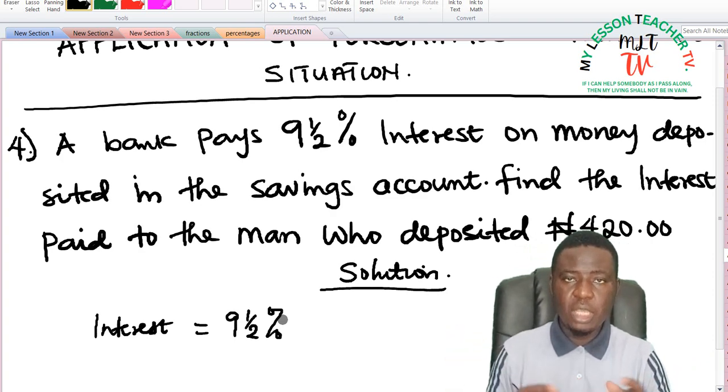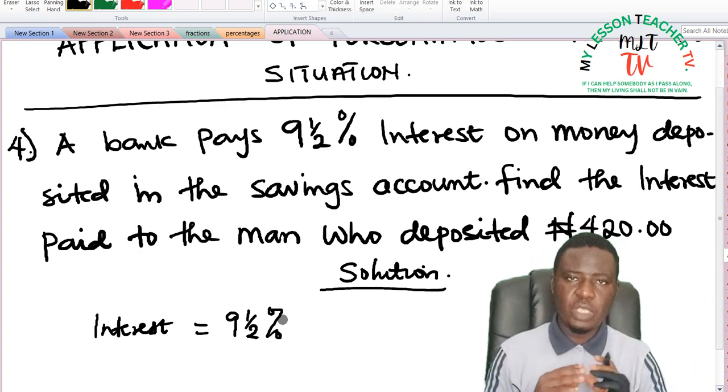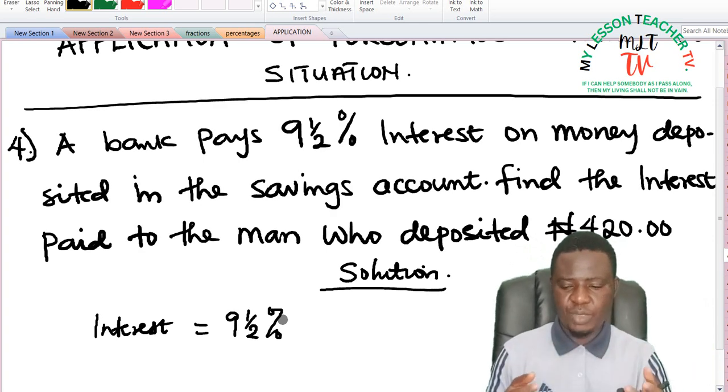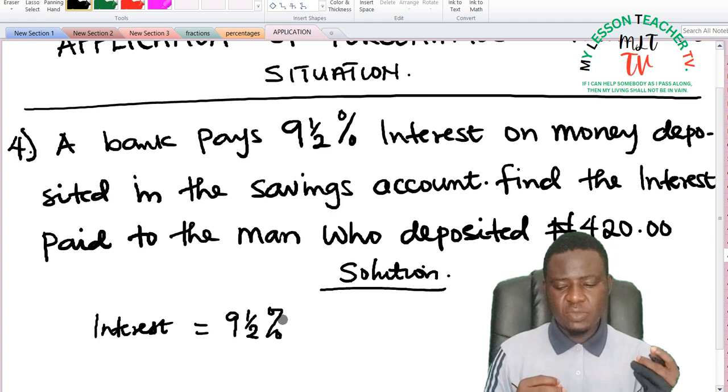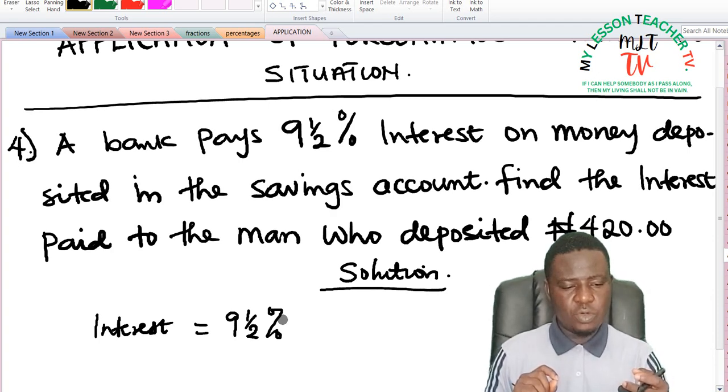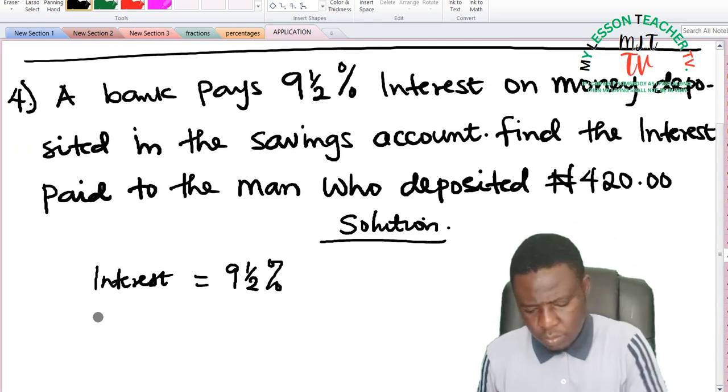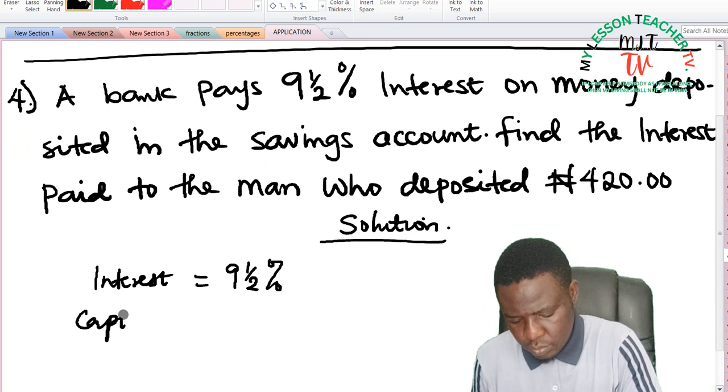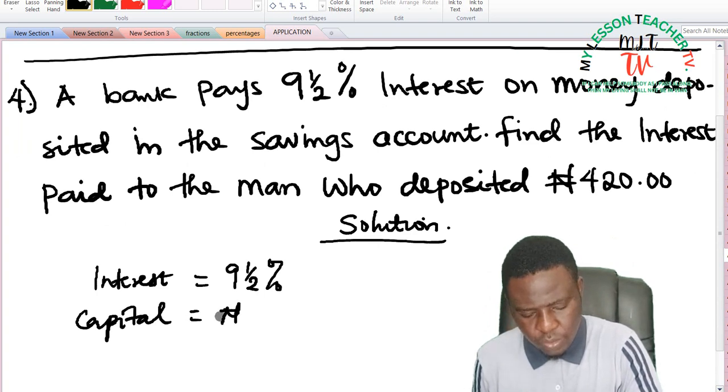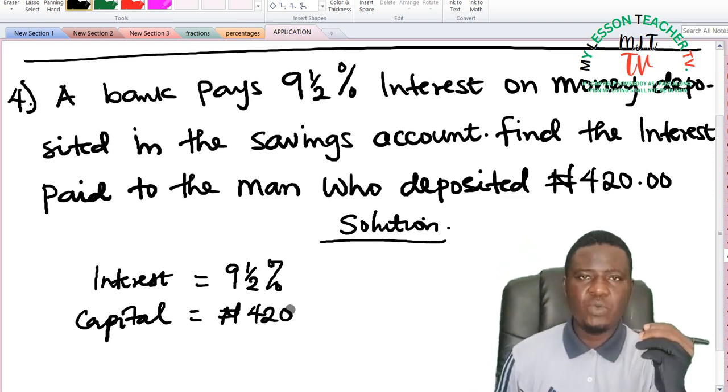If you save money they didn't give us the duration, but let's assume that duration is just a year or depending on how long you save it. If you save for a year your interest will be nine percent, if you save for a month it's still nine and a half percent. So we are asked to find the interest paid to the man who deposited 420 naira, so his capital is said to be 420 naira.